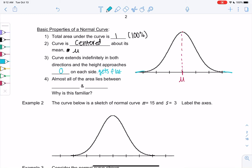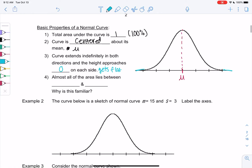And then almost all of the area lies between three standard deviations. So that'll be mu plus three sigma on the right side, and mu minus three sigma on the left side. That's the flat part, when the graph starts to get flat. And why is this familiar? The empirical rule told us three standard deviations was 99.7%. So that's why the curve ends around three standard deviations.